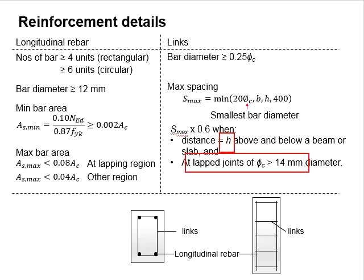In other words, the links should be more closely spaced near the beam or slab joint.